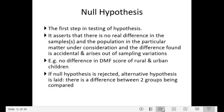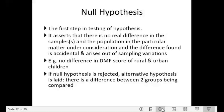Null hypothesis is the first step in testing a hypothesis. It asserts that there is no real difference between the samples and the population in the particular matter under consideration, and any difference found is accidental and arises from sampling variations. For example, we begin with the assumption that there will be no difference in the DMF score of rural and urban children. If a difference is found, the null hypothesis is rejected and an alternative hypothesis is accepted — that is, there is a difference between the DMF scores of rural and urban populations.